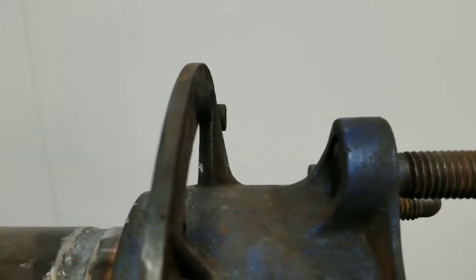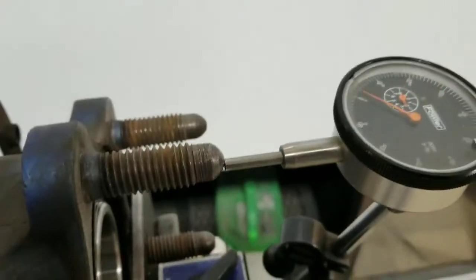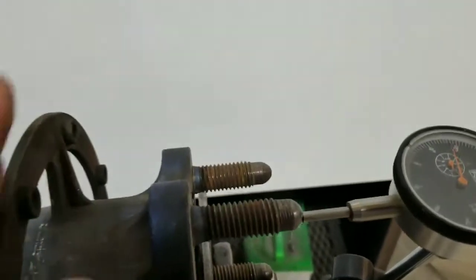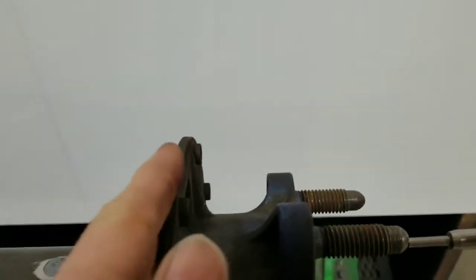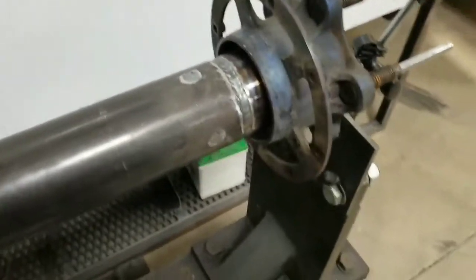Kind of hard to hold the camera and do everything at once but what happens is when you spin the housing, if it's bent, the hub or the wheel is going to move in or out. That will tell you if it's bent.